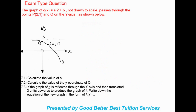The question states: the graph of g(x) equals a times 2 to the power of x plus p, not drawn to scale, passes through the points P(2, 1) and Q on the y-axis. We can see an asymptote of 3, point P at coordinates (2, 1), and Q where the graph crosses the y-axis.